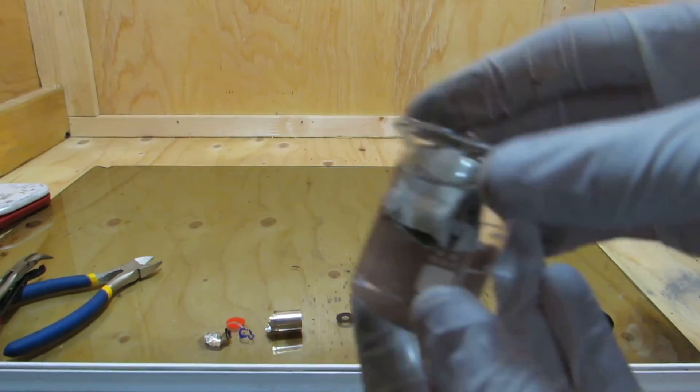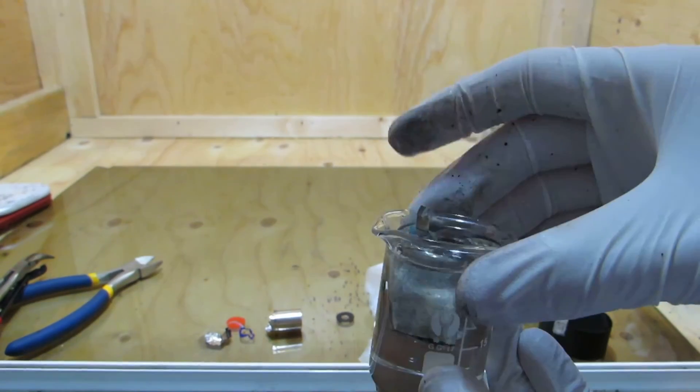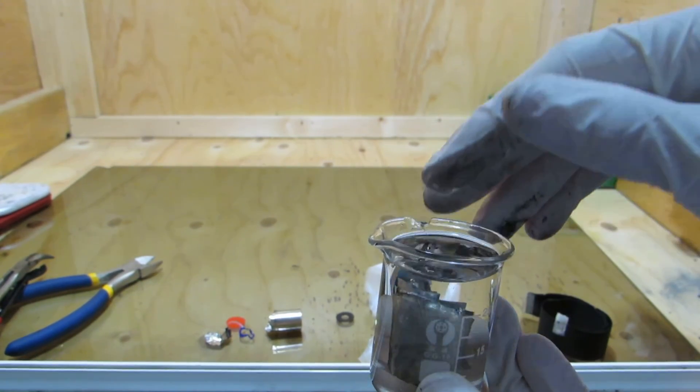Taking a closer look at the lithium, it is still nice and shiny, and it actually floats on the mineral oil because it has such a low density.